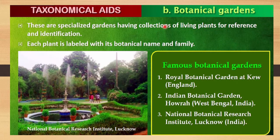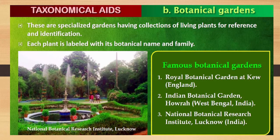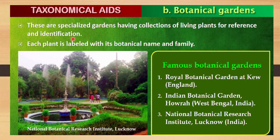Next are botanical gardens. These are specialized gardens, different from normal gardens. All plants grown here are labeled with their scientific name, local name, and family. In a normal garden there is no labeling, but in botanical gardens specific information is written on each plant. They have collections of living plants — unlike herbarium which has dried plants.